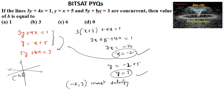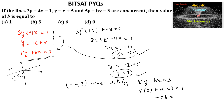This point (−2, 3) must satisfy the third line 5y + bx = 3. Substituting: 5(3) + b(−2) = 3, so 15 − 2b = 3, giving −2b = −12, thus b = 6. So the value of b is 6 for all three lines to be concurrent. The answer is option C.